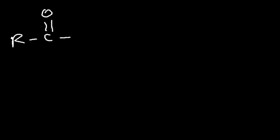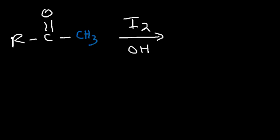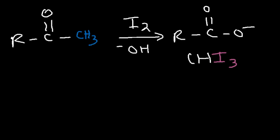In this video, we're going to talk about the haloform reaction and also the iodoform test. The iodoform test is a test for methyl ketones. So if you have a ketone that has a methyl group or a CH₃ group next to it, it's going to give a positive iodoform test, which is basically a mixture of iodine and hydroxide — it could be sodium hydroxide or potassium hydroxide dissolved in water. What's going to happen is the ketone is going to be oxidized into a carboxylate ion. The methyl group is going to be attached to three iodine atoms. This product is known as iodoform, and it precipitates out of the solution as a yellow solid. The presence of that yellow solid gives you a positive iodoform test for a methyl ketone.